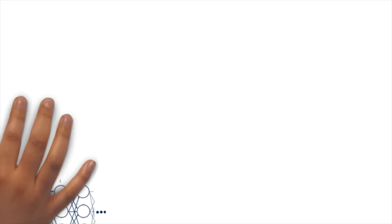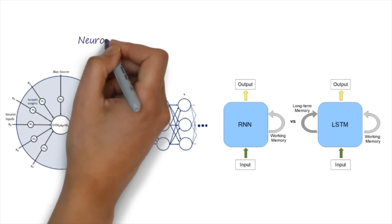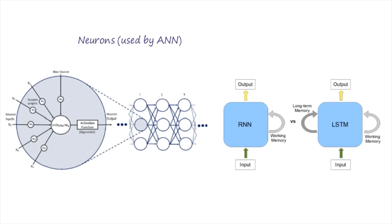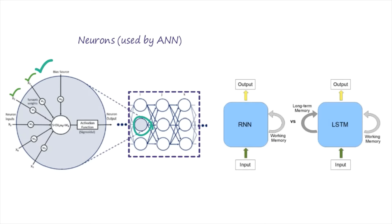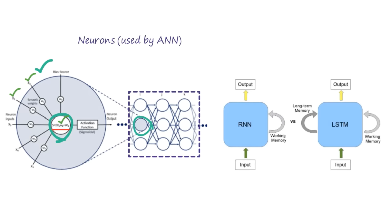Now, whenever talking about neurons in a neural network, a particular neuron will look like this. We have some input in the neural network and this neuron will have some activation function and summation function. We will calculate weight times input plus bias, and then pass this information to the activation function. This is how a neural network processes information.